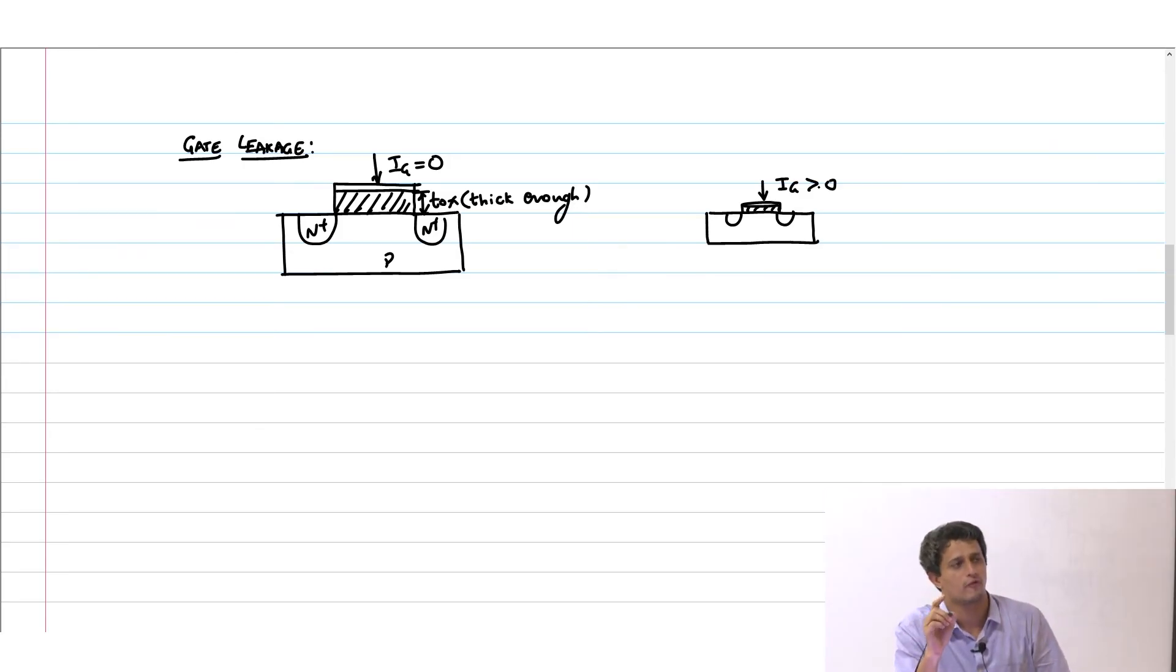If you scale the device then this current started going up, I_G became greater than 0. This is purely a quantum mechanical effect, it cannot be explained through classical effects. The wave function of the electron would sort of go into the oxide and there is a finite probability that the electron will be found on the other side of the oxide as well. This forms a significant amount of current if you just blindly keep scaling your device. People needed to do something to prevent this because your NMOS transistor, the greatest advantage is this gate current is 0.